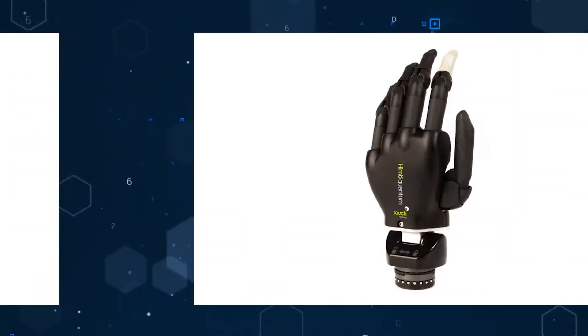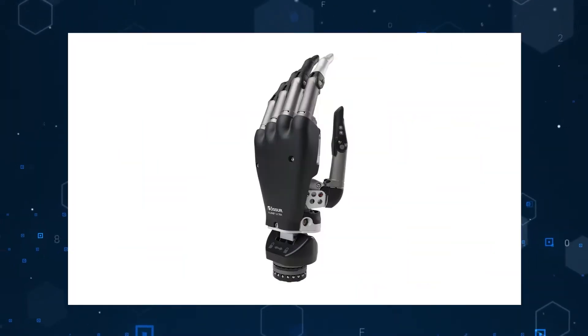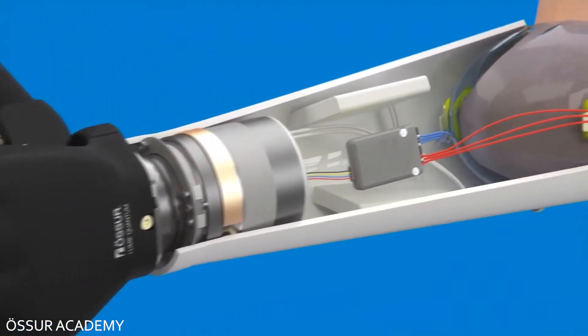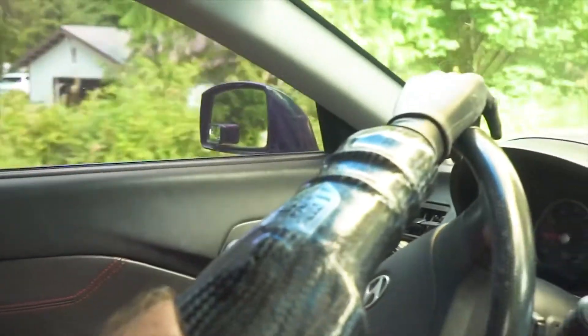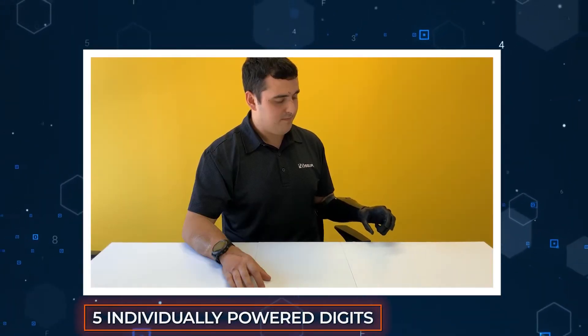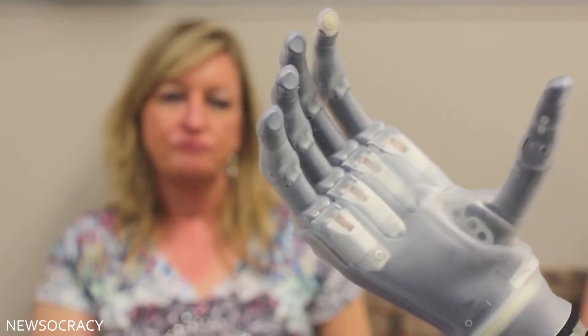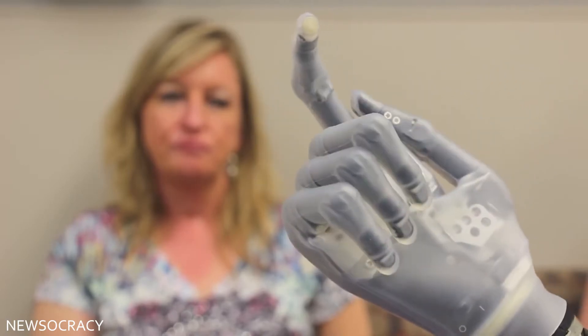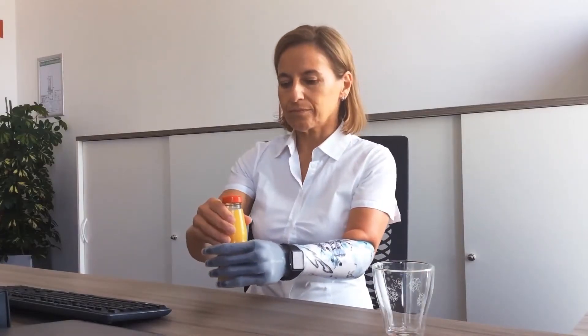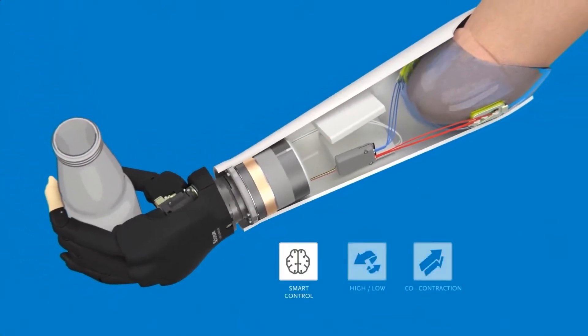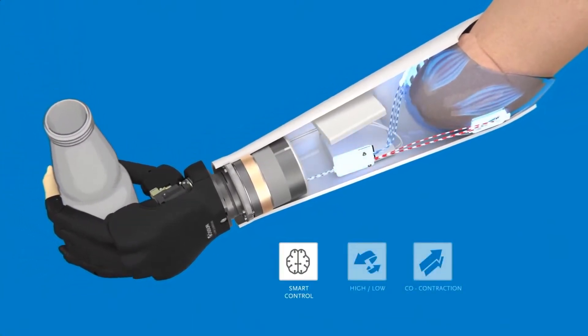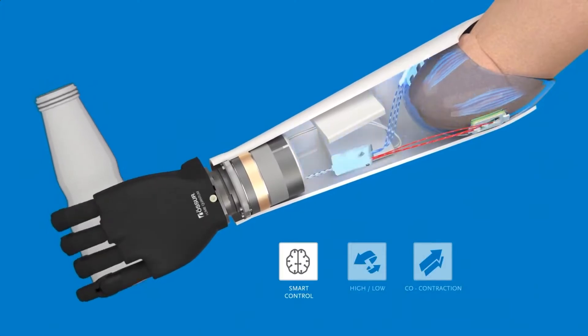There are several versions of the hand, including the iLimb Access, iLimb Quantum, and iLimb Titanium, among others. But the basic foundation of the device is the same across all products. These are multi-articulating prosthetic hands with five individually powered digits, offering an electrically rotating thumb with a manual override. The way the hand works is it allows you to have control by using muscle twitches in the stump area. Certain muscle twitches trigger specific positions for pre-configured grips.